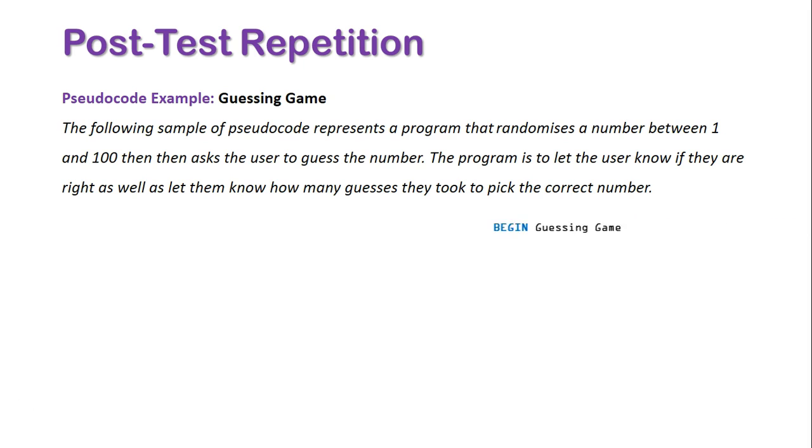The pseudocode would start off with BEGIN, followed by the name of the program. We would have our series of steps to start off our program. We need to randomize the number between 1 and 100. We need to set count to 0, so we understand how many guesses the user is taking. We need to set user guess to 0. And then we need to display, can you guess the random number, to the actual user.